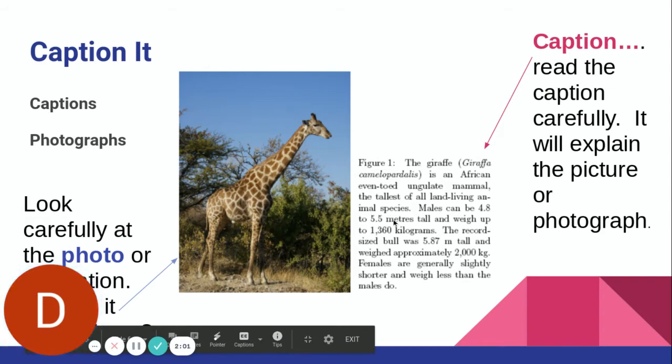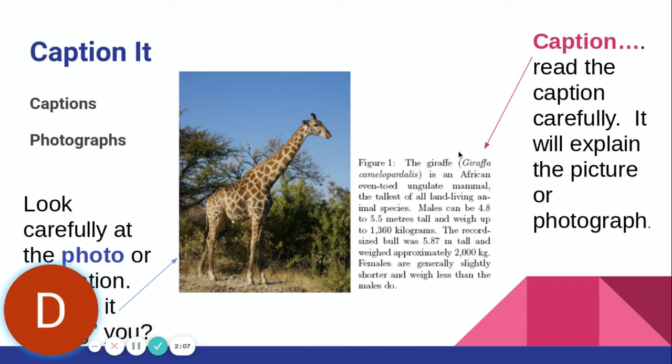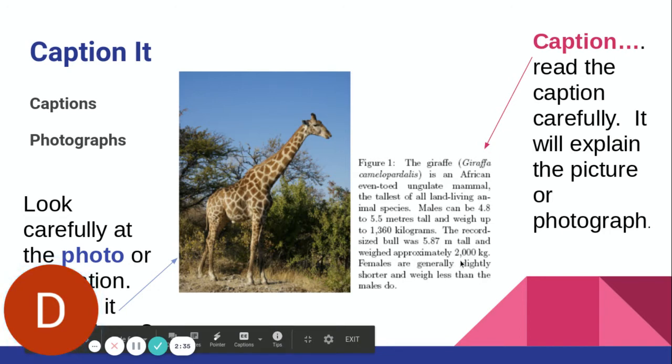By reading the caption, it's going to explain what the picture or photograph is about. In this case, it tells us that the giraffe is an African even-toed mammal, the tallest of all land living animal species. We can also learn that males can be up to 4.8 to 5 meters tall and weigh up to 1,360 kilograms. The record size bull was 5.87 meters tall and 2,000 kilograms. Females are generally slightly shorter and weigh less than the males.